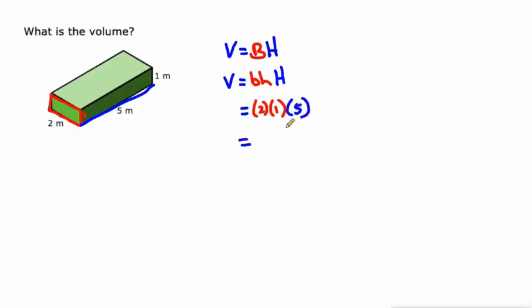So two times one is two times five is 10. 10 meters cubed is the volume of this prism. So area of the base is two, as in two square meters. When we multiply by the height, five meters, we get 10 cubic meters.